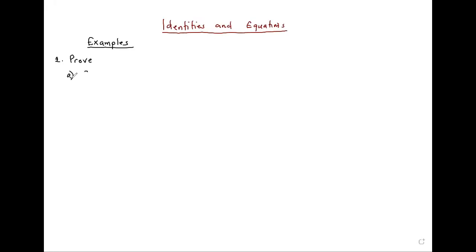Example one: cos squared theta plus three sine squared theta is equal to three minus two cos squared theta. I want to prove that these are equal, so let's take the left hand side.